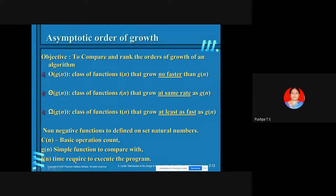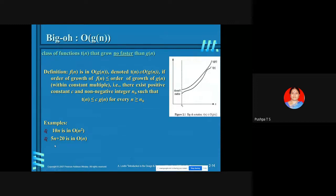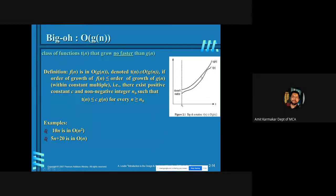Now we'll go to the formal definition of Big O. Consider C times G(N) — G(N) multiplied by some constant. T(N) is below this curve C times G(N). This means the order of growth of T(N) is less than G(N). The class of functions that grow no faster than G(N) — formally, T(N) is said to be in Big O of G(N) if there exists a positive constant C and non-negative integer N₀ such that T(N) ≤ C·G(N) for every N ≥ N₀.